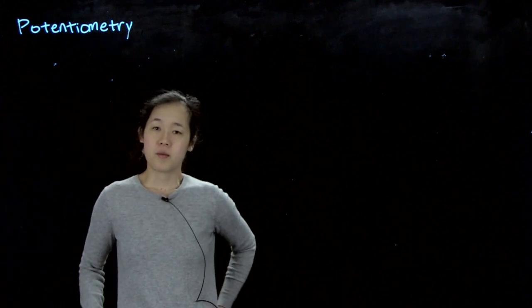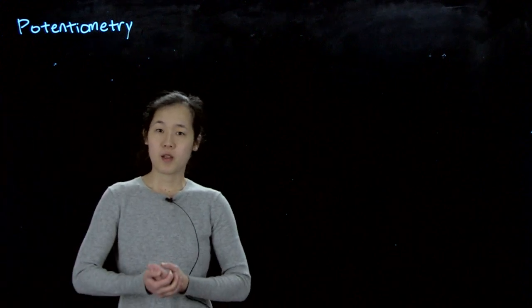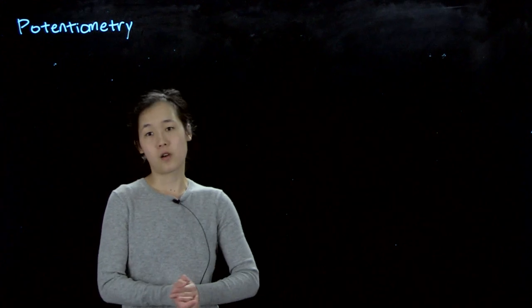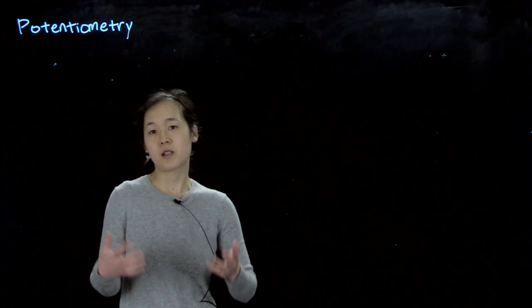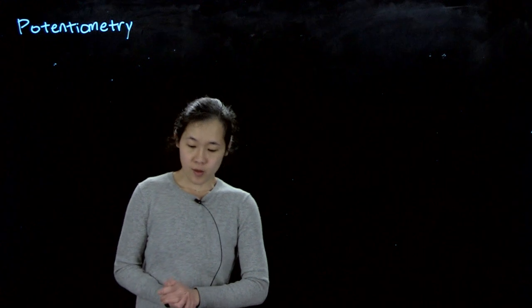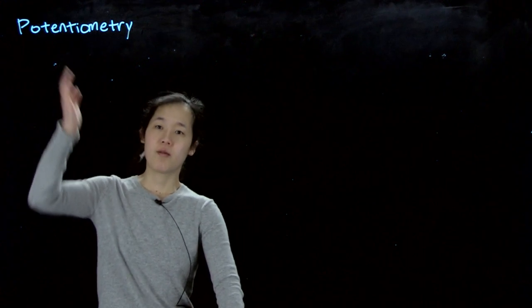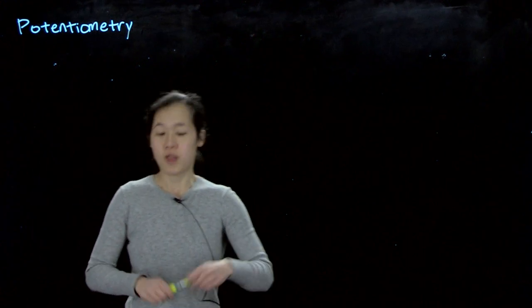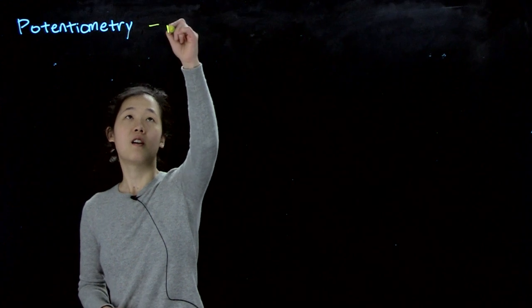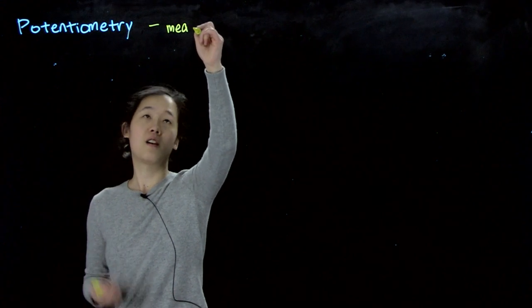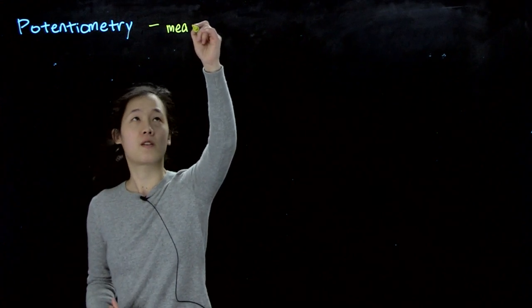OK, so today we'll be talking about some applications of electrochemistry beyond electrolysis or electricity generation from a galvanic cell. So one application is potentiometry. What this means is that we're measuring potential of a cell under some constant current, typically zero current.